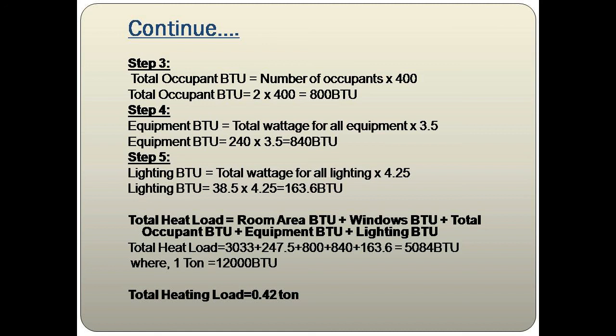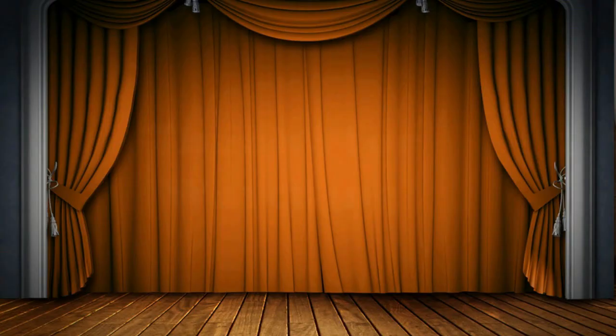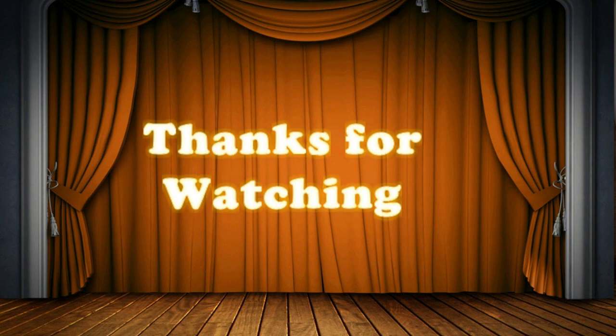Summing all values: 3,033 + 247.5 + 800 + 840 + 163.6 = 5,084 BTU. Since 1 ton = 12,000 BTU, dividing 5,084 by 12,000 gives 0.42 ton of refrigeration. This means a 0.5-ton AC will be sufficient for that room. If a 0.5-ton unit is unavailable, you can go with a 0.75-ton. That's our video for today — please subscribe and leave your feedback in the comments.